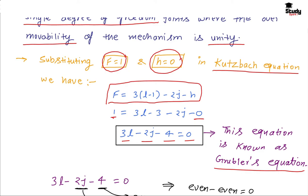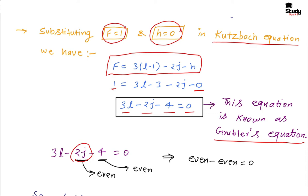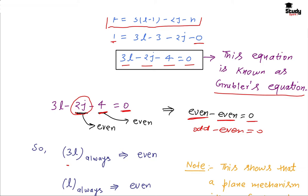From Gruebler's equation, we see that 2j is an even term and 4 is also an even term. Their combination gives 0. As we all know, even minus even gives 0, but odd minus even can never equal 0. So we conclude that 3l must always be even.